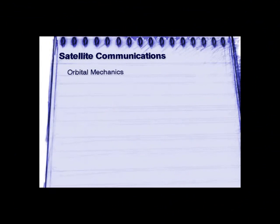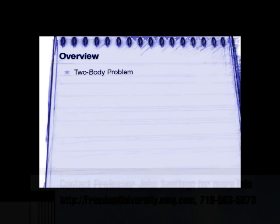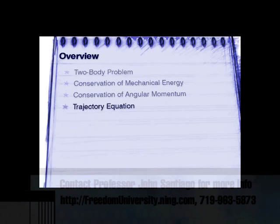Before talking about satellite communications, let's begin our discussion on orbital mechanics. Let's start with an overview. I'll begin with the discussion of the two-body diagram. The two-body diagram will allow us to derive the conservation of mechanical energy, as well as the conservation of angular momentum. From there, we'll also show what the trajectory equation is, as well as providing you with the solution.